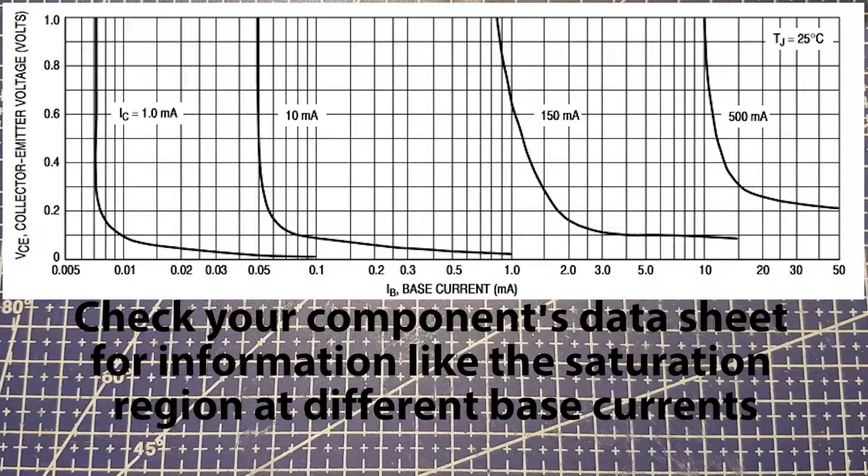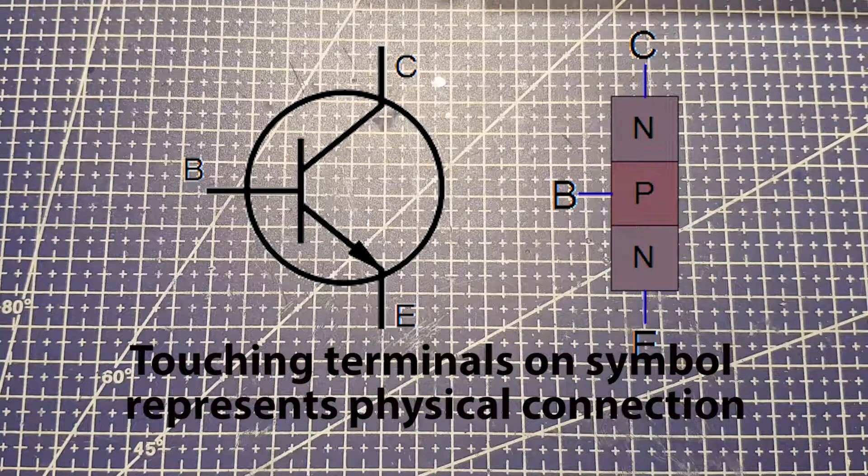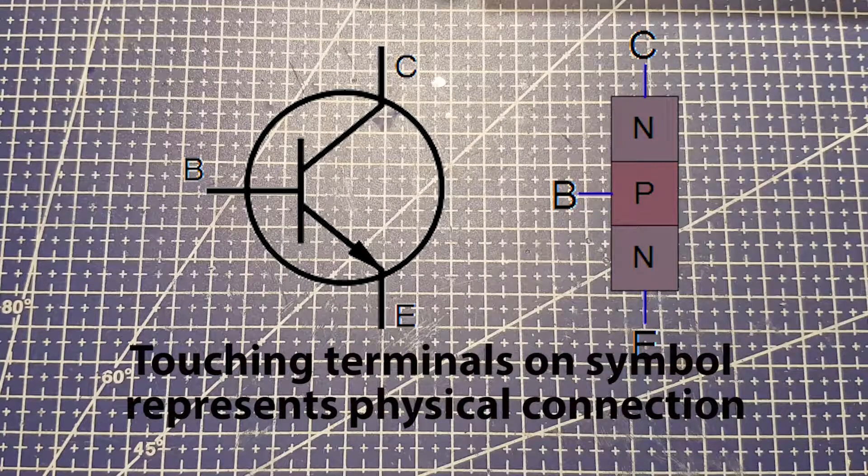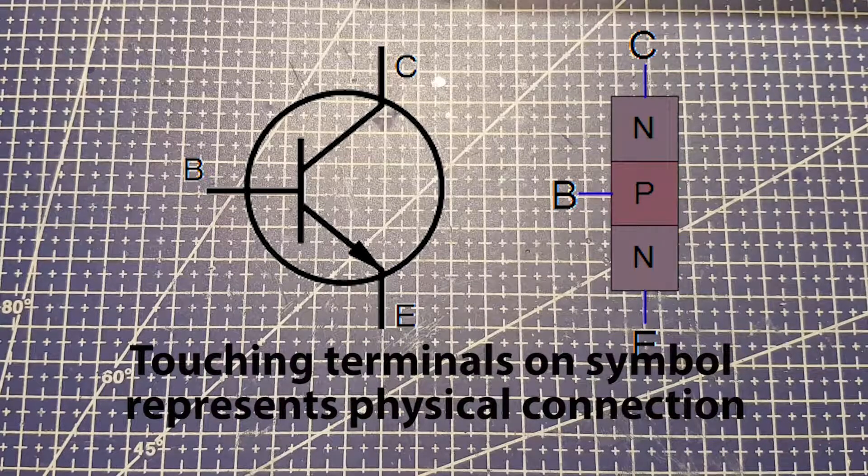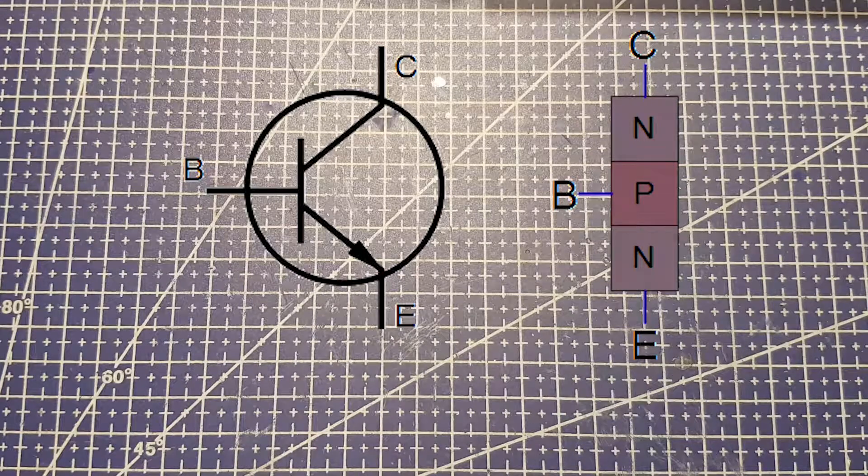Now there's a cutoff region, which means they're completely off. And there's a saturation region, which is when they're completely on. And that is when they're being used as a digital switch. The base of the transistor is physically connected inside the transistor itself. So when current flows, the current is flowing from the base to the emitter as well as the collector to the emitter.